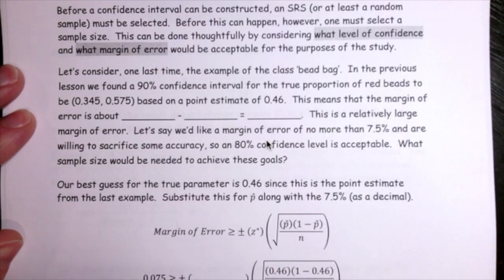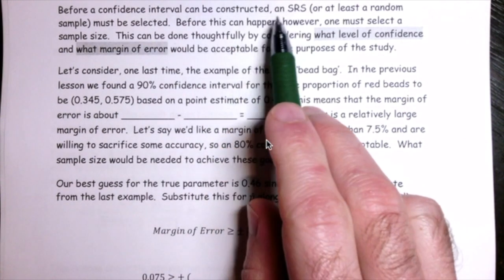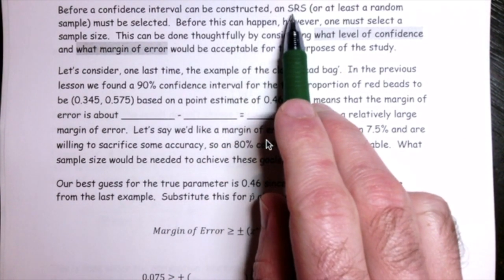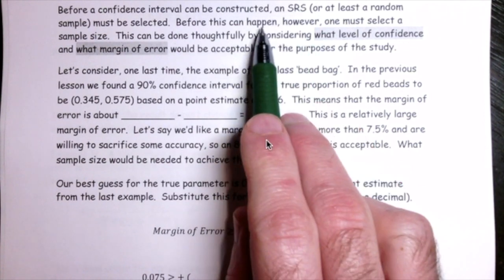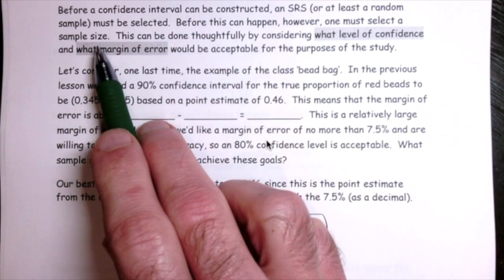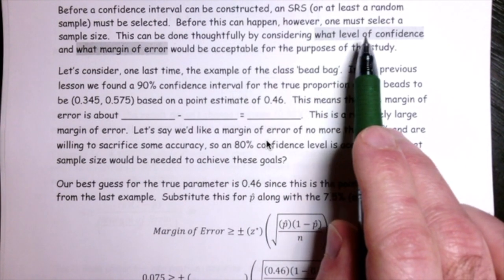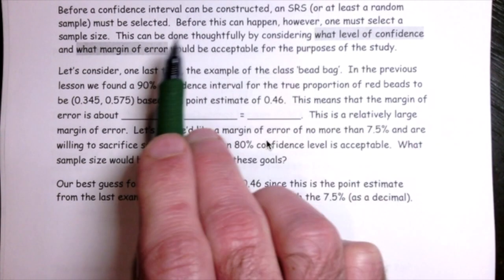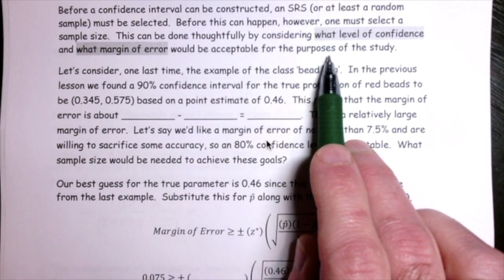Let's look at how you choose a sample size in order to set the margin of error for a confidence interval. Before a confidence interval can be built, you need a simple random sample selected out of a population. But before you can do this, you have to determine what size sample you want to use. To do that, you want to think about what level of confidence and what margin of error are going to be acceptable for the purposes of whatever study you're doing.